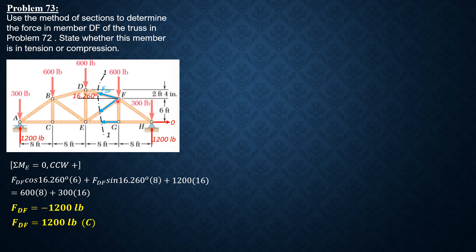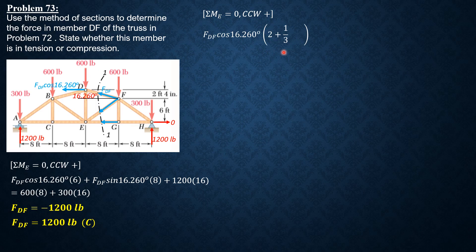Another way to solve for FDF is by applying the principle of transmissibility of a force, so that we only have one component — the horizontal component. Moving FDF to point D, the vertical component passes through E, so only the horizontal component FDF cosine 16.26 degrees is considered, with a moment arm of 2 and 1/3 plus 6 feet.